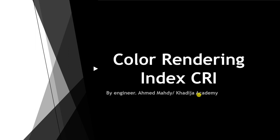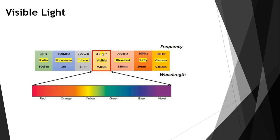What is the Color Rendering Index? This is one of the factors we need to understand when we select a luminaire. As we know, visible light is the light which the human eye can see, with its own different colors. If the wavelength is lower or higher — such as in the ultraviolet, X-ray, gamma, infrared, microwave, or radio ranges — we cannot see it.